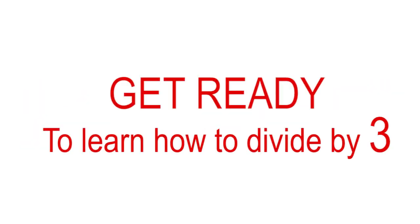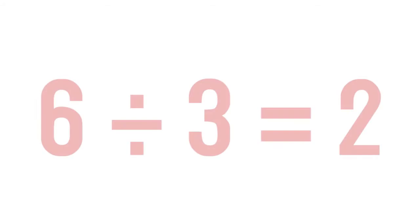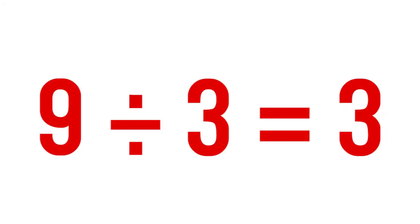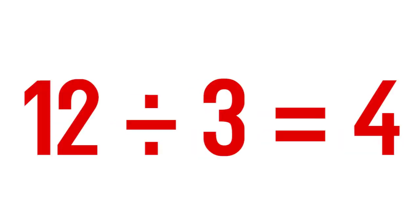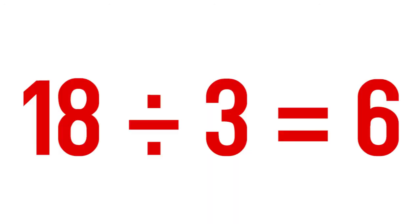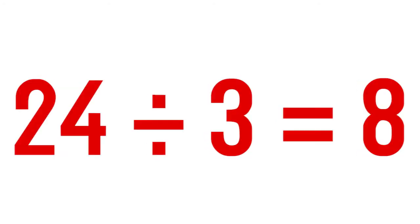Get ready to learn how to divide by 3. 3 divided by 3 equals 1. 6 divided by 3 equals 2. 9 divided by 3 equals 3. 12 divided by 3 equals 4. 15 divided by 3 equals 5. 18 divided by 3 equals 6. 21 divided by 3 equals 7. 24 divided by 3 equals 8.